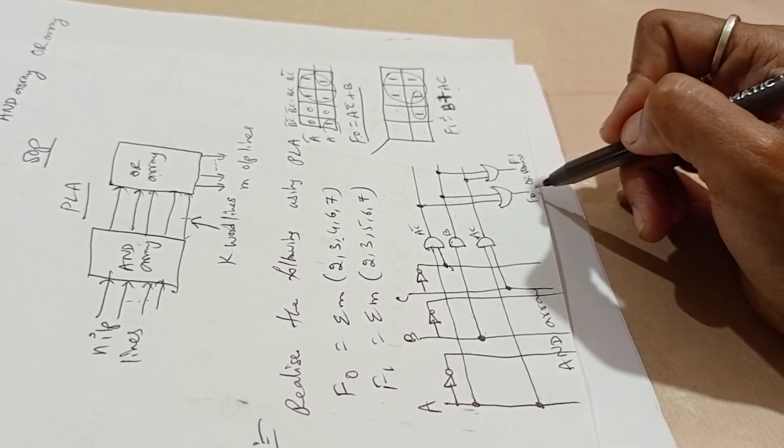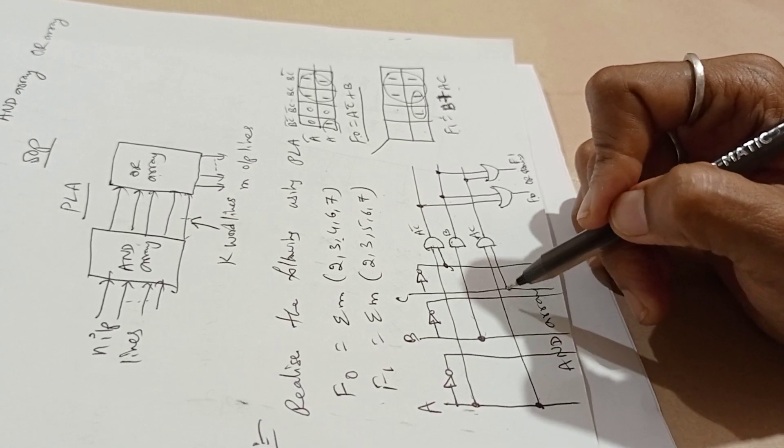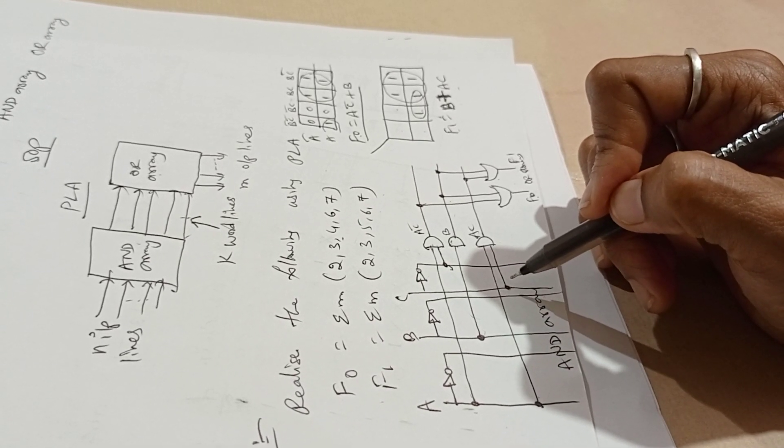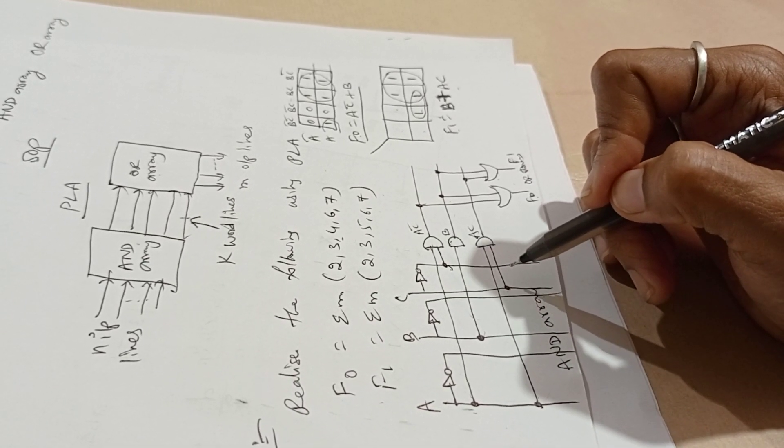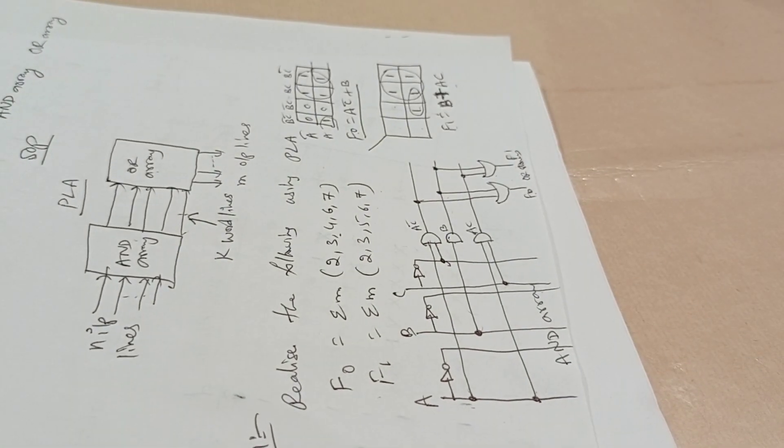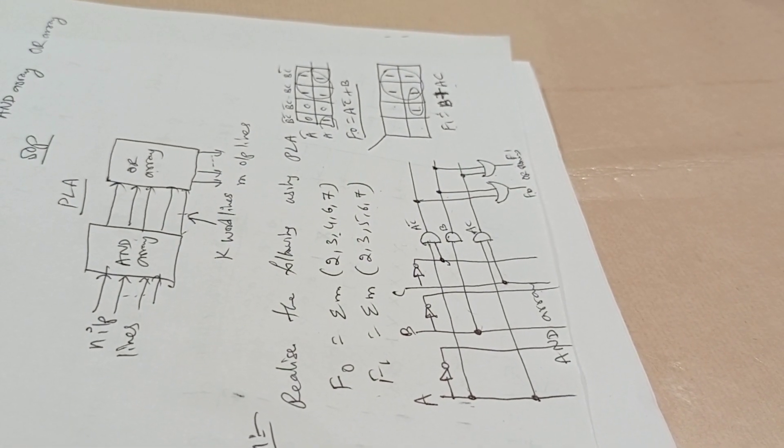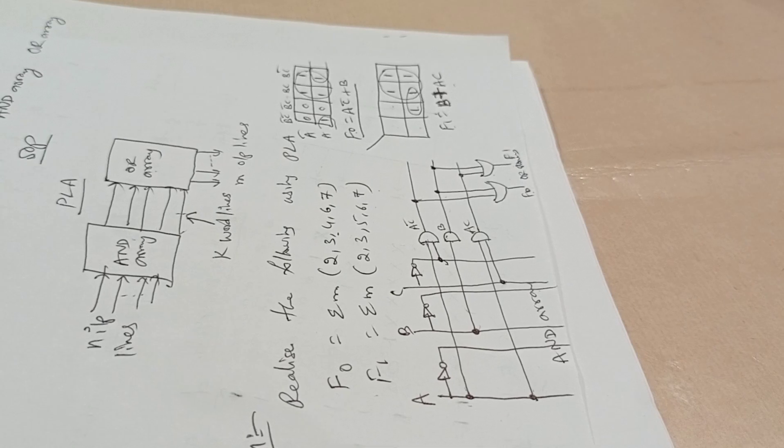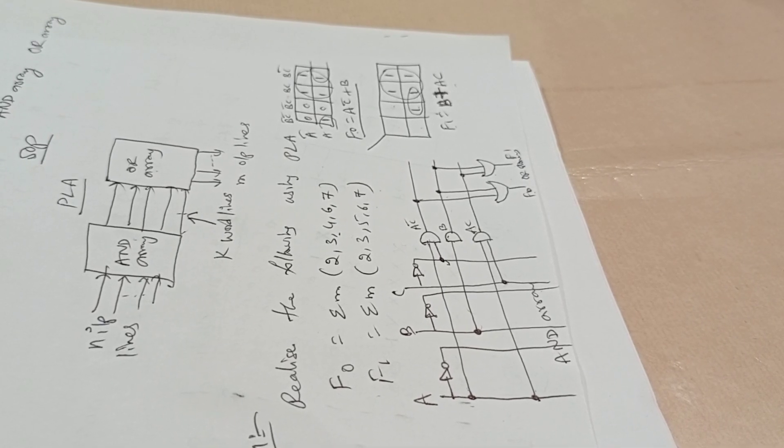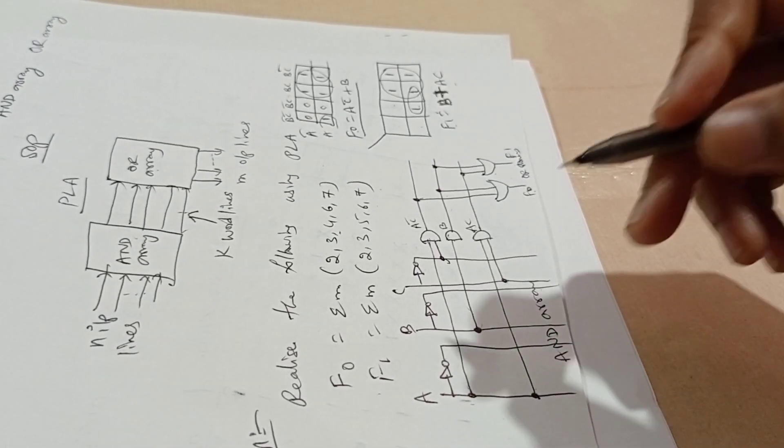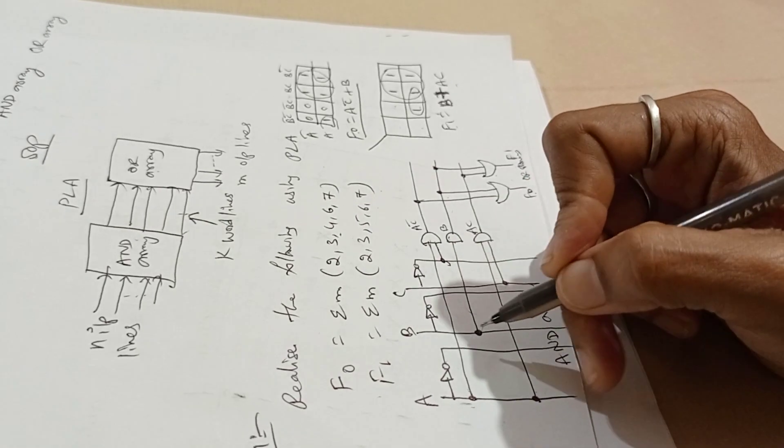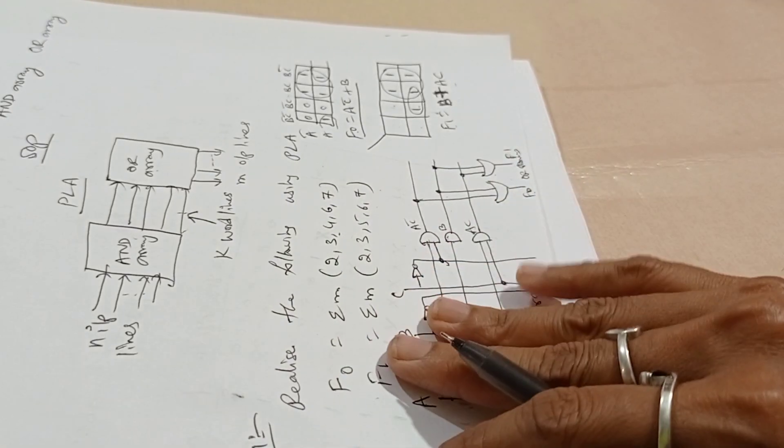The expressions are fixed, so we are using dot for fixed connections. For fusible connections, we will use cross. You can change these as fusible also.